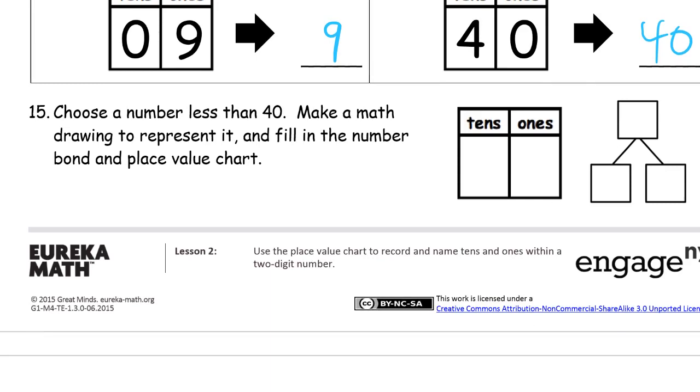Choose a number less than forty. Make a math drawing to represent it, and fill in the number bond and place value chart. All right, so I'm going to write the number three tens, seven ones. So there's a number less than forty. I'm going to make a math drawing to represent it. Three quick tens. Five, six, seven. And then I'm going to fill in the number bond and place value chart. The place value chart is this right here. I did that first. And now I'm looking at tens, I've got ten, twenty, thirty. Be careful with the number bond, you don't write it like this. This is not a place value chart. So here the numbers have to actually add up. This would be three and seven, and that should be ten, not thirty-seven. So this is an important trick to watch when you're transitioning from place value charts to number bonds. Don't be fooled by this. This is three tens. That's thirty. And thirty and seven is thirty-seven.